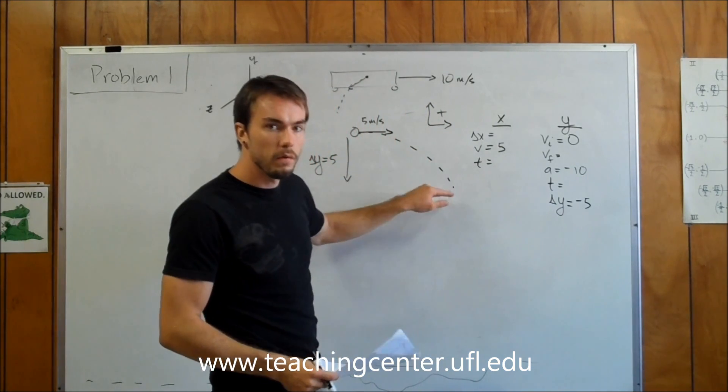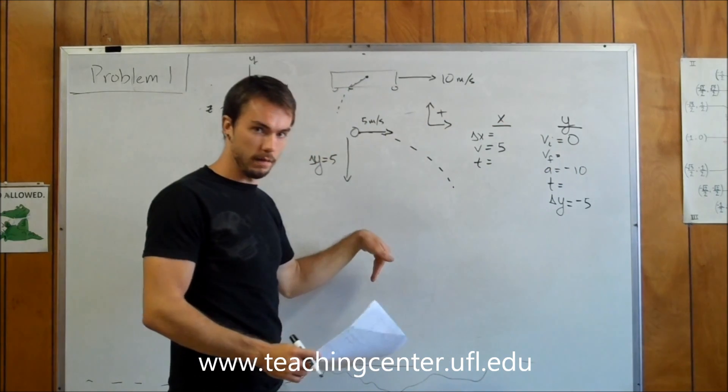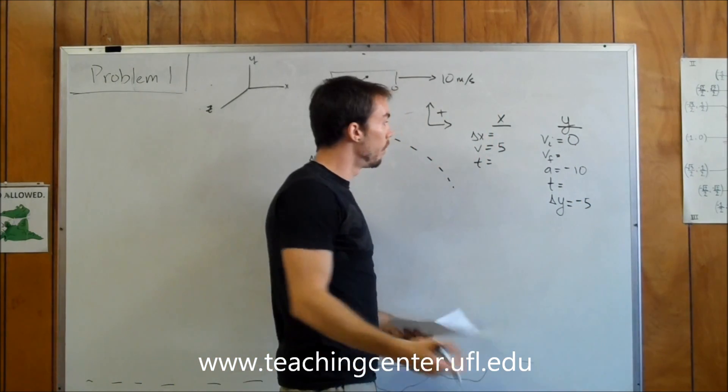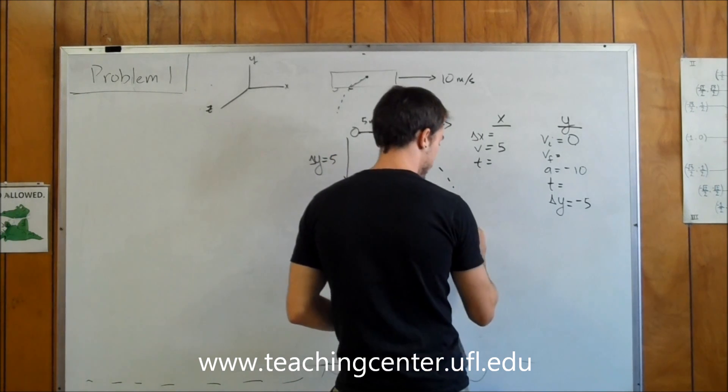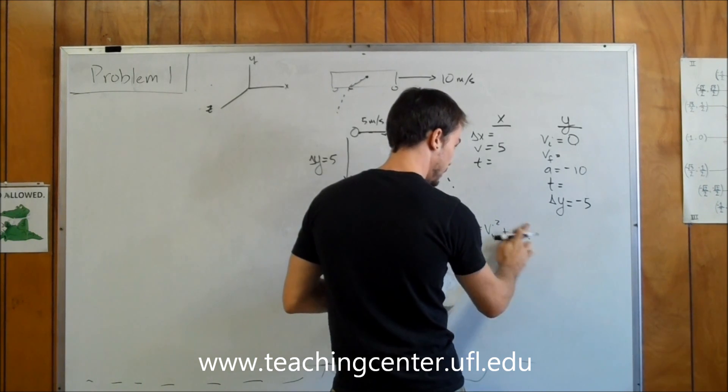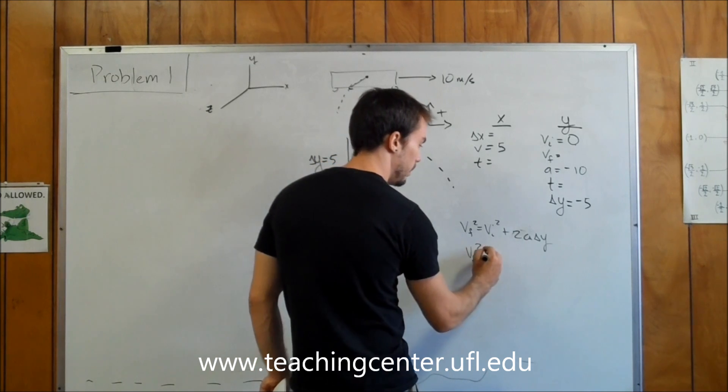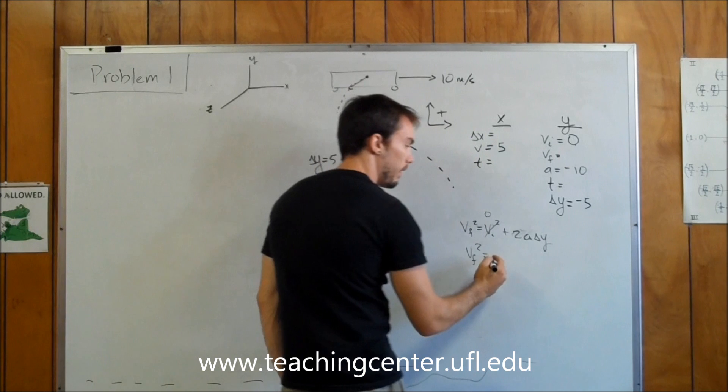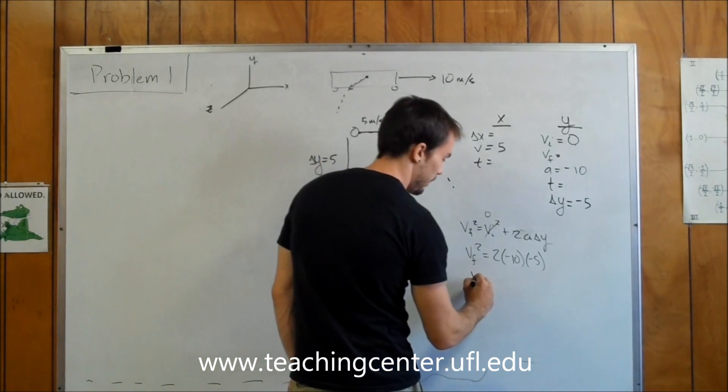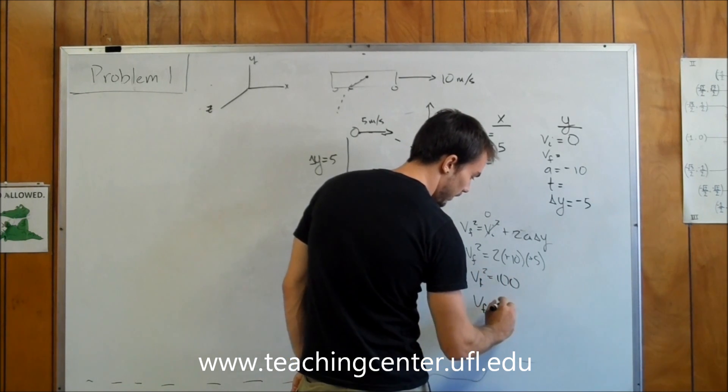We're looking for the total velocity when it hits the ground. So we're trying to solve for the Y velocity, the vertical velocity when it hits the ground. We know zero, negative 10, negative 5—those are three variables. We pick the right equation, which is VF squared equals VI squared plus 2A delta Y. VI squared is zero, so we have 2 times negative 10 times negative 5. Negatives cancel. VF squared equals 100, so VF equals 10.